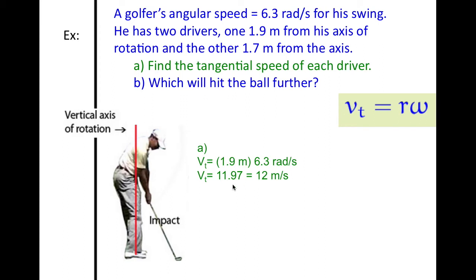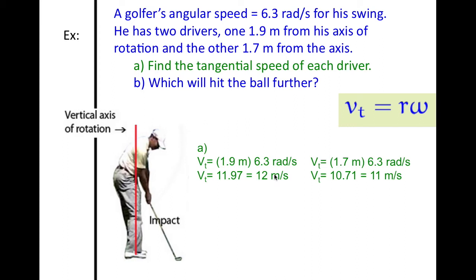For driver one at 1.9 meters, you get a tangential speed of 12 meters per second. That means using this driver you can hit the ball at 12 meters per second. For the second driver, you get a speed of 11 meters per second. Comparing the two, the longer driver will hit the ball further.